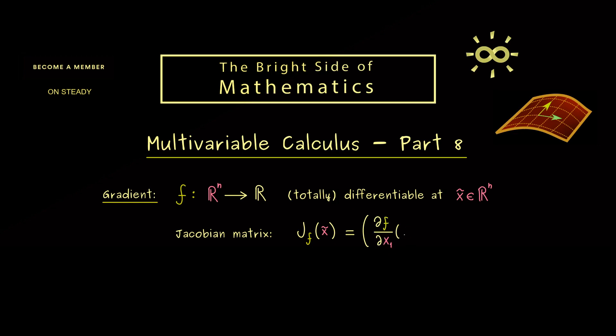And now we know inside this matrix we find the partial derivatives. So the first entry is the partial derivative of f with respect to x₁ at the point x̃. Then in the second column we find the partial derivative of f with respect to x₂. And then this continues until we have the last entry given by the partial derivative of f with respect to xₙ.